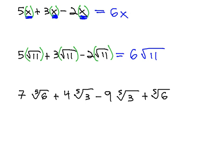So for example, if we have 7 times the 5th root of 6, plus 4 times the 5th root of 3, minus 9 times the 5th root of 3, plus 6 times the 5th root of 6, plus the 5th root of 6. What we can do is add them together by identifying the like radicals, or the radicals that match.